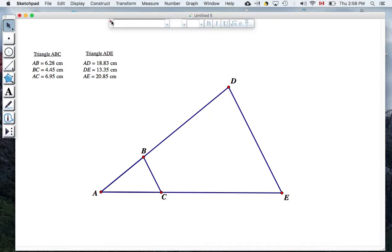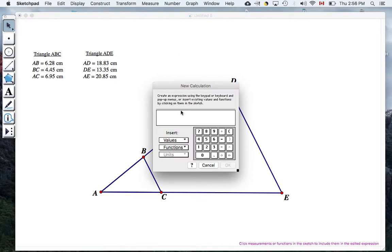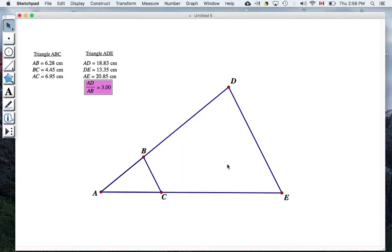So on Geometer Sketchpad, I'm going to go up to Number and Calculate. And then here's my calculation box. I'm going to calculate AD, and then divided by AB. And it gives me the answer right there, but if I hit OK, it'll also display it on my screen.